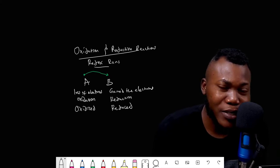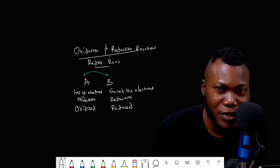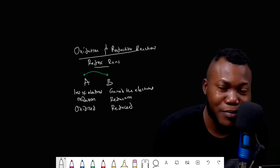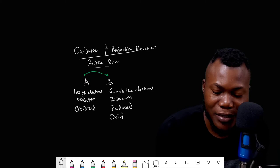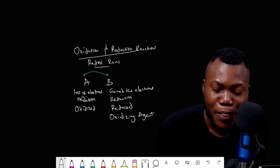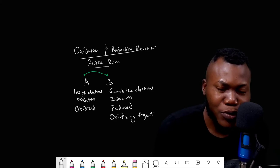Because A underwent oxidation and became oxidized by losing electrons to B, if there was no B, A would not have undergone oxidation. So B is called the oxidizing agent — the agent responsible for A undergoing oxidation. On the flip side, B was able to undergo reduction because A gave it electrons, so A is the reducing agent.